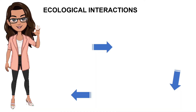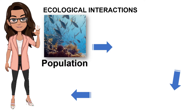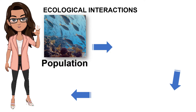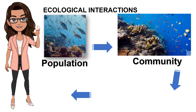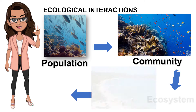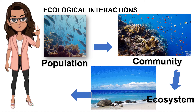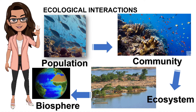The ecological interactions that take place within a specific area are generally classified into four levels: populations, communities, ecosystems, and the biosphere.